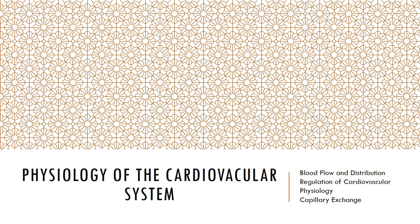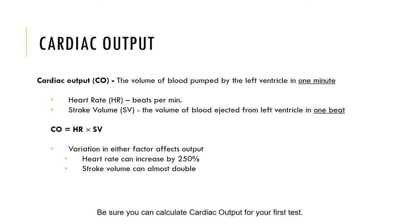Cardiac output is the amount of blood pumped by the left ventricle in one minute and is the best overall indicator of peripheral blood flow. It depends on two factors: heart rate in beats per minute and stroke volume, which is the amount of blood pumped out of the ventricles during a single heartbeat. Cardiac output equals heart rate times average stroke volume. For example, a heart rate of 75 beats per minute and a stroke volume of 80 milliliters per beat produces a cardiac output of approximately 6,000 milliliters per minute.